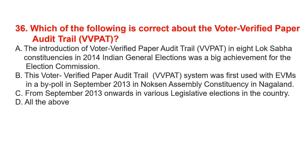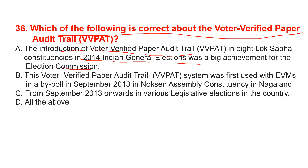Which of the following is correct about the Voter Verified Paper Audit Trail (VVPAT)? The introduction of VVPAT in 8 Lok Sabha constituencies in the 2014 Indian general elections was a big achievement (correct). The VVPAT system was first used with EVMs in a by-poll in September 2013 in Noksen Assembly constituency in Nagaland (correct). VVPAT was used from September 2013 onwards in various legislative elections in the country (correct). So the correct option is all of the above.